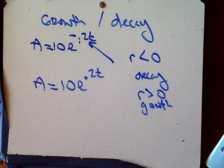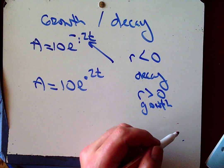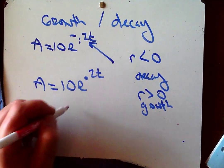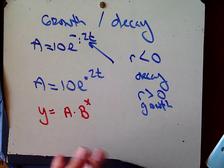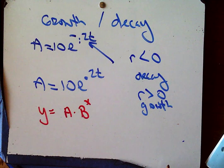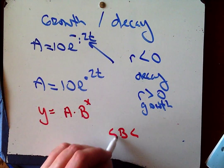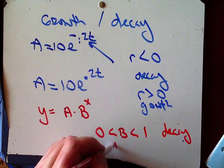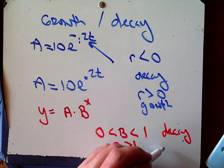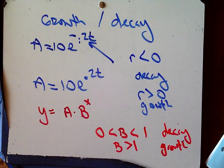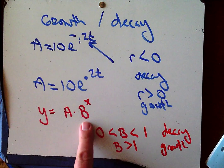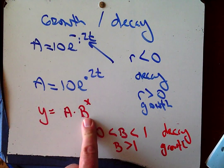Can we say anything about this form — y equals A times B to the x? How do I know using this form if I have growth or decay? When B is between 0 and 1, I have decay. But if B is bigger than 1, I have growth. Here we're looking at the sign on the rate, and here we're looking at how big the base is.